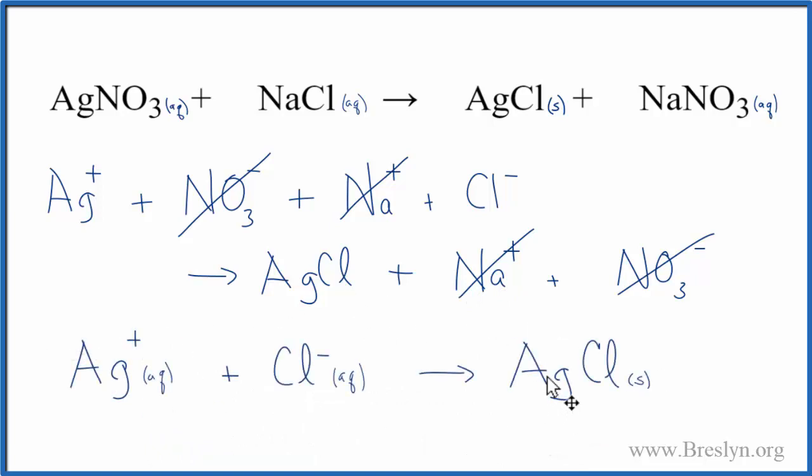So this is the correct net ionic equation for AgNO3 plus NaCl, that's silver nitrate, plus sodium chloride. And this is Dr. B. Thanks for watching.